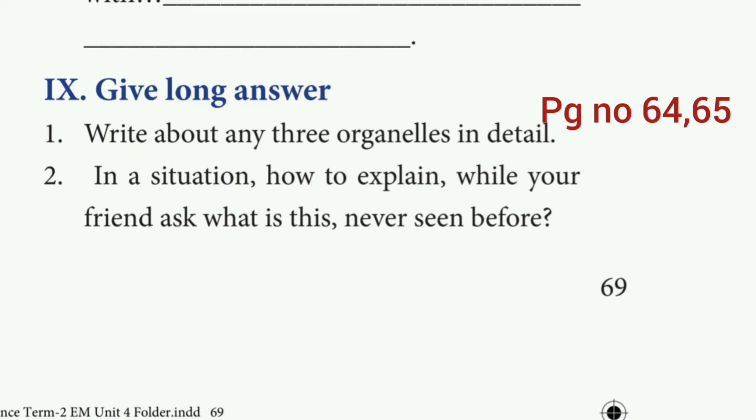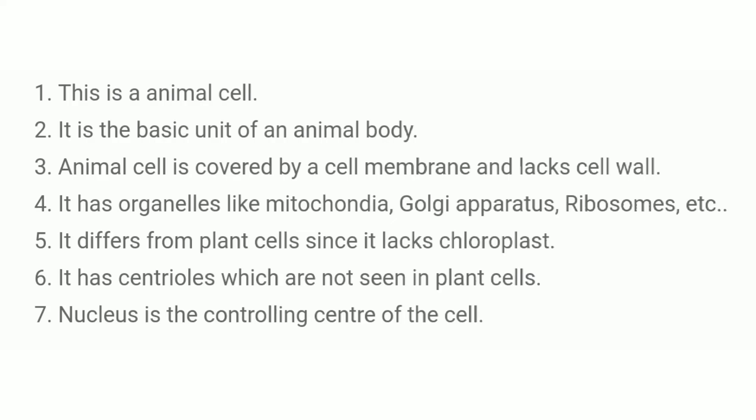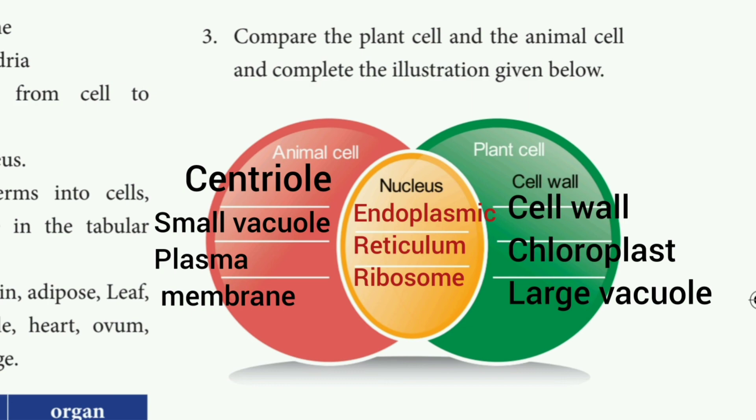Second question: In your situation, how to explain when your friend asks what is this, never seen before. The answer is this is an animal cell. It is the basic unit of an animal body. The animal cell is covered by a cell membrane and lacks cell wall. It has organelles like mitochondria, Golgi apparatus, ribosomes, etc. It differs from plant cell since it lacks chloroplast. It has centrosomes which are not seen in plant cells. Nucleus is the controlling center of the cell.